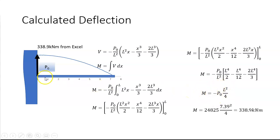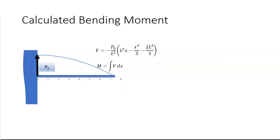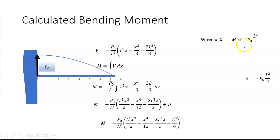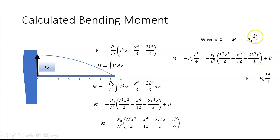For the bending moment at any point, I take the indefinite integral of the shear force, getting l²x²/2 minus x⁴/12 minus 2l³x/3 plus a constant B. I know that when x equals zero, M equals negative p₀l²/4. Substituting x=0 makes all other terms vanish, so B equals negative p₀l²/4. Substituting B back gives the bending moment at any point.